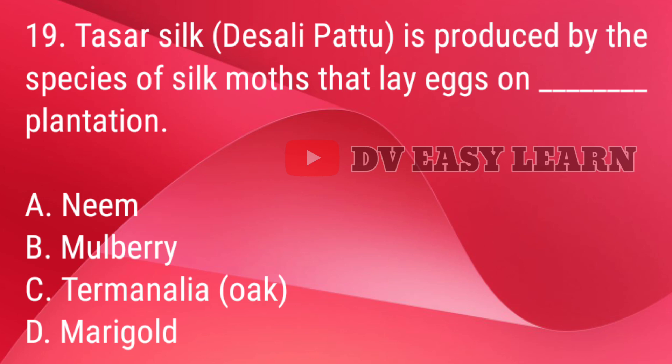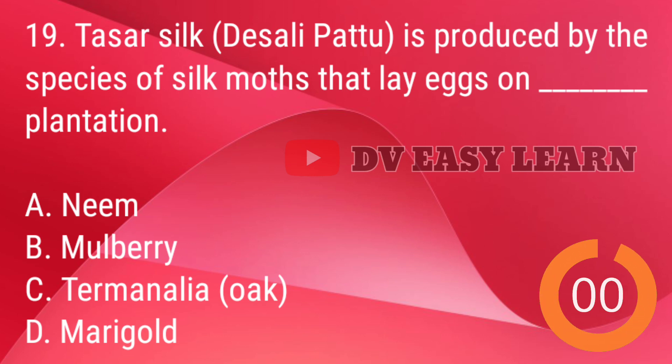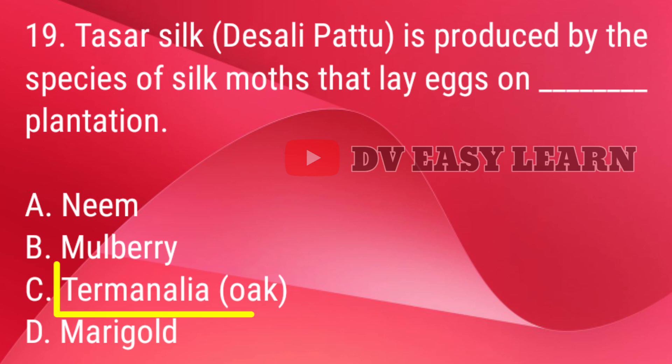Q19. Tassa silk or Desali pattu is produced by the species of silk moth that lay eggs on — correct answer: Terminalia or Oak plantation.